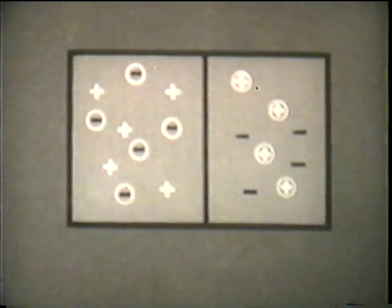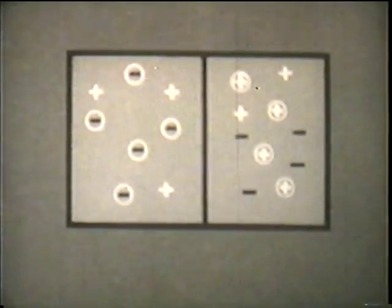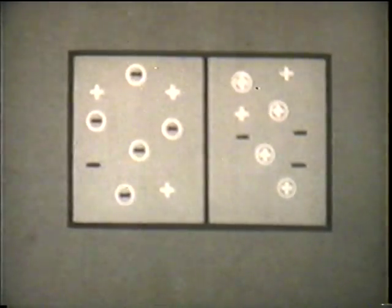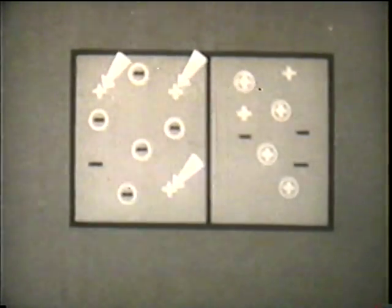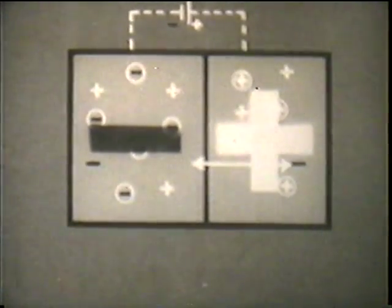Now let us consider what happens when we join the two pieces together. Some of the positive carriers will drift into the N-type germanium. Similarly, some of the negative carriers will drift into the P-type. If we now count up the positive and negative charges, we see that in the P-type, there are more negative charges than there are positive charges, so the material has become negatively charged. In the same way, the N-type material has become positively charged. We can represent this state of affairs by an imaginary battery connected like this, with a negative pole to the P-type germanium. Because of the electric field existing between the two pieces of germanium, more positive carriers are prevented from entering the positively charged N-type germanium. Like charges repel, remember. And similarly, more negative charges are prevented from entering the negatively charged P-type germanium.